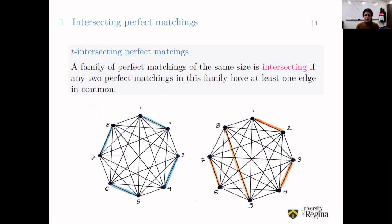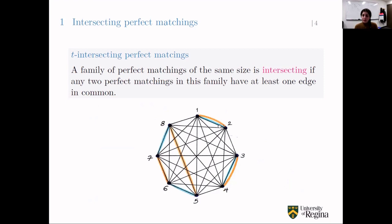Here is an example. Consider the blue edges in the complete graph K_8 — they form a perfect matching. The orange edges also form a perfect matching. If we take their union and overlap them, we see they have at least one edge in common: edge {1,2} is shared. This is an example of intersecting perfect matchings, and in fact also 2-intersecting since two edges are shared. When we overlap them, their union forms two 2-cycles and a 4-cycle, which is an even partition lambda of 8.